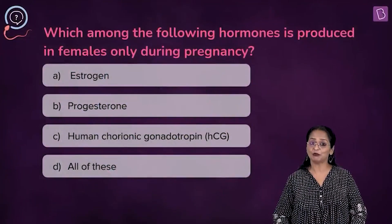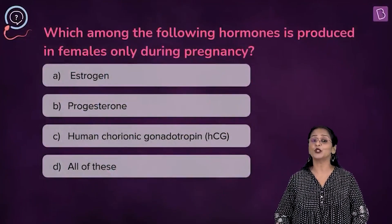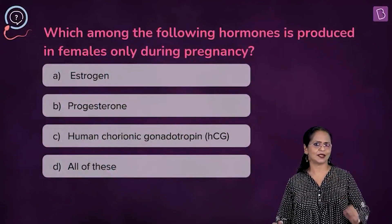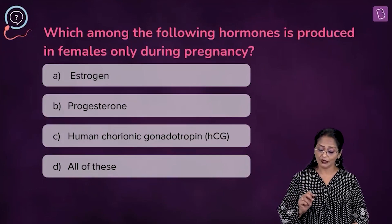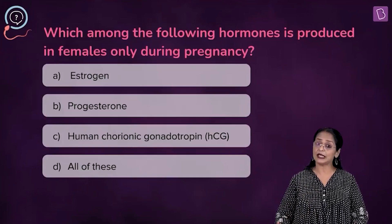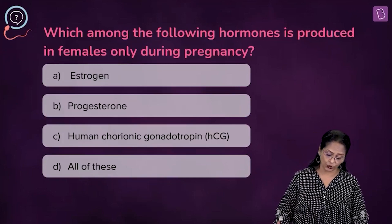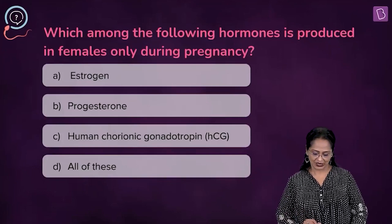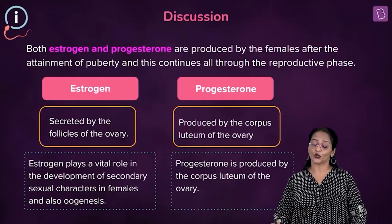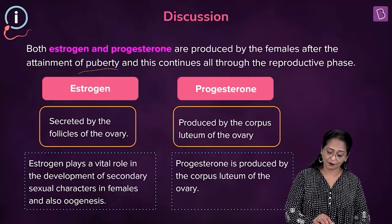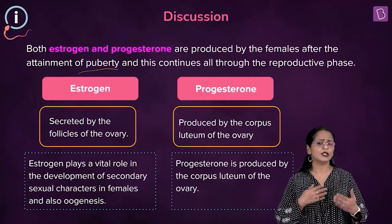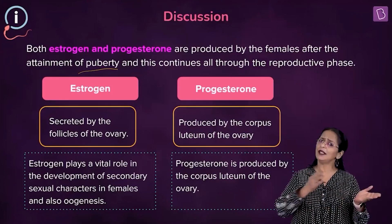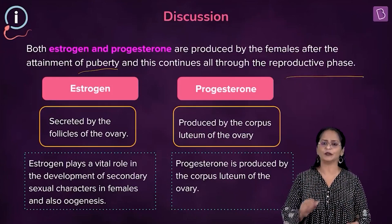A new question: which among the following hormones is produced in females only during pregnancy? A — estrogen, B — progesterone, C — HCG or human chorionic gonadotropin, D — all of these. Estrogen and progesterone are produced in females right from the time of puberty, around the age of 10 to 14, and continue throughout the reproductive phase of females.